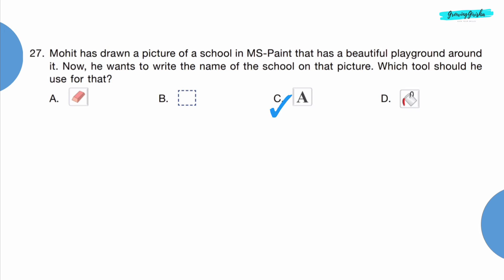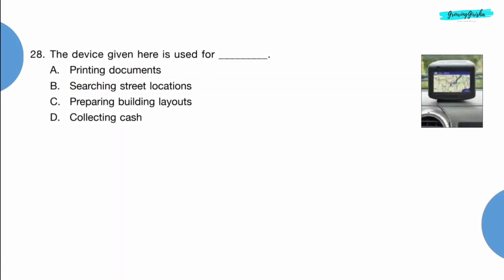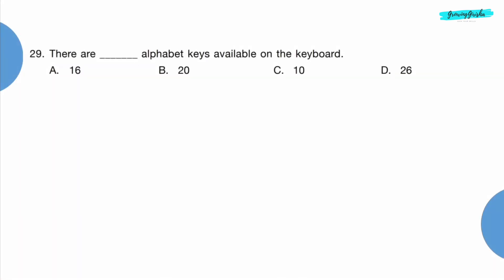Question 28: The device given here is used for dash. Option B, searching street locations. Question 29: There are dash alphabet keys available on the keyboard. Since the number of alphabets are 26, the number of alphabet keys will be 26. Option D.